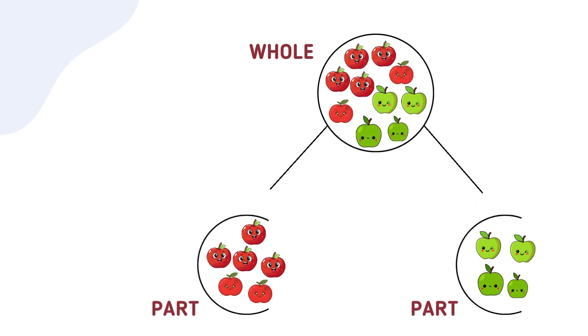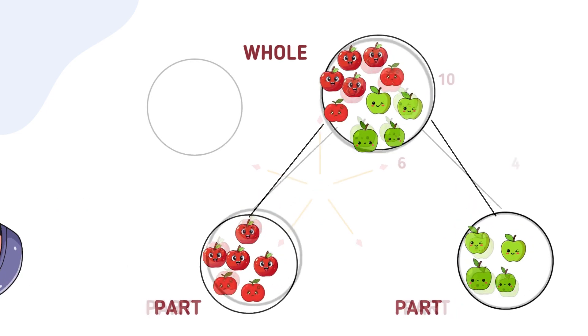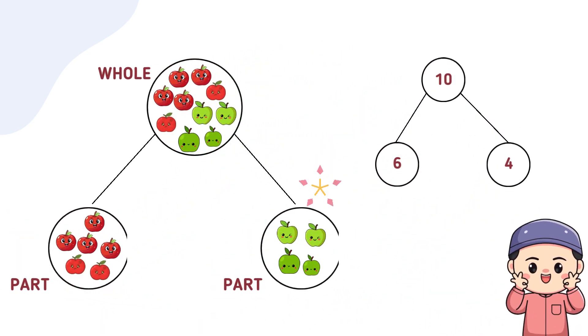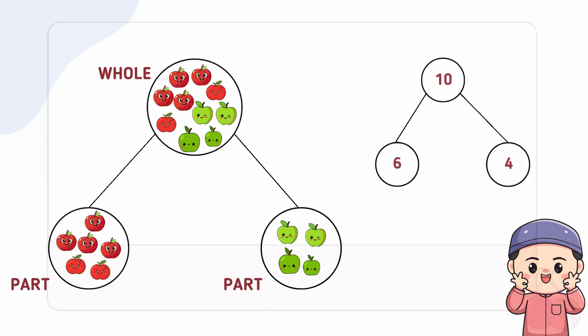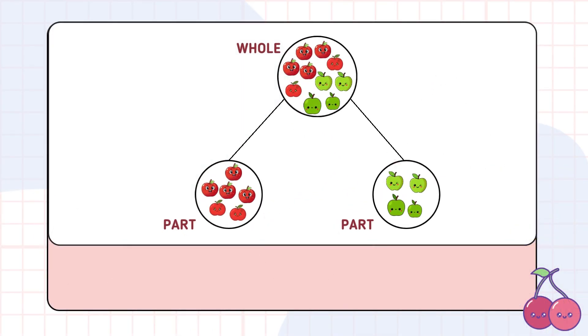One labeled 6 for the red apples and the other labeled 4 for the green apples. This shows how the parts, red and green apples, combine to make the whole group of apples. And it works the other way, too. If you know the parts, you can find the whole. Just like apples can be split into different colors, other items can be divided in various ways, too. Let's look at another scenario.